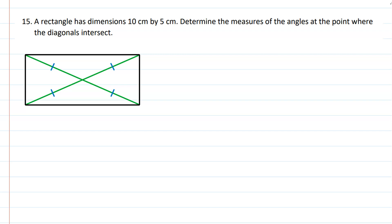Okay, this is a written assignment on right triangle trigonometry and Pythagorean theorem. The problem is number 15. It is saying that a rectangle has dimensions of 10 centimeters by 5 centimeters.